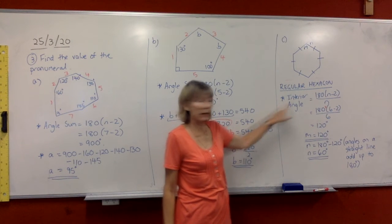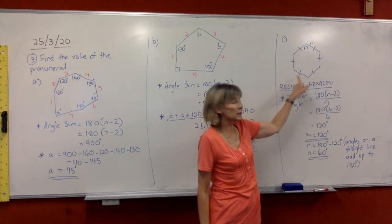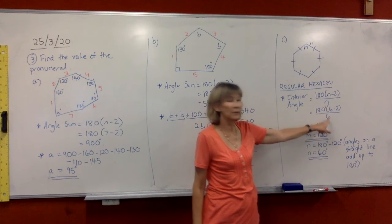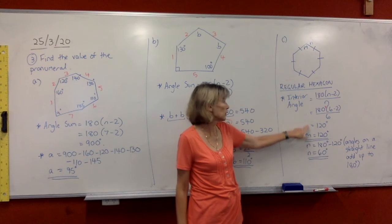To find the interior angle, we're going to go straight to this formula. We've got six sides on the hexagon, we're putting a 6 in for n, and when you work it out on your calculator, you get 120 degrees.